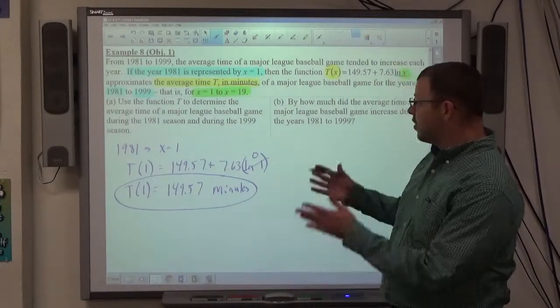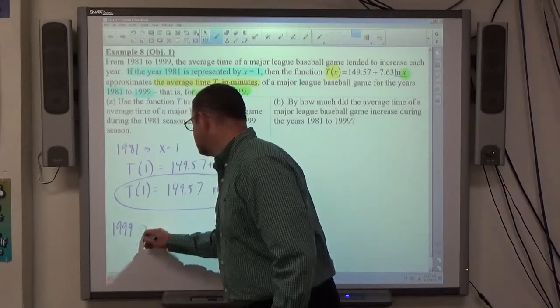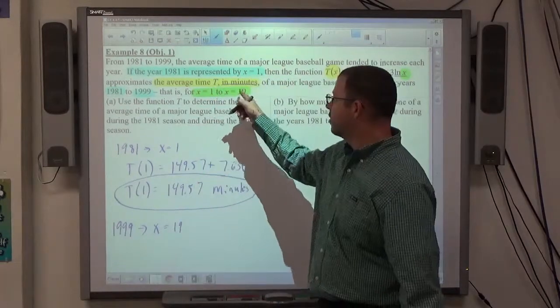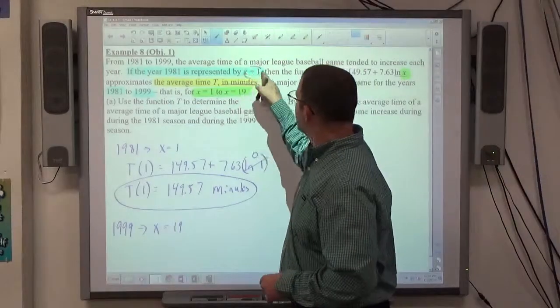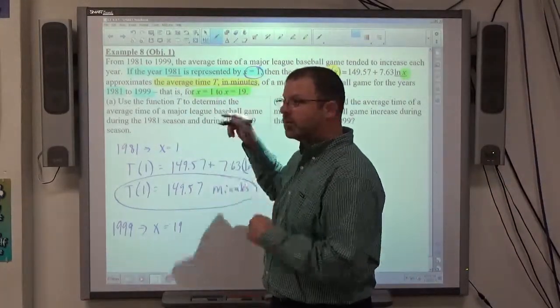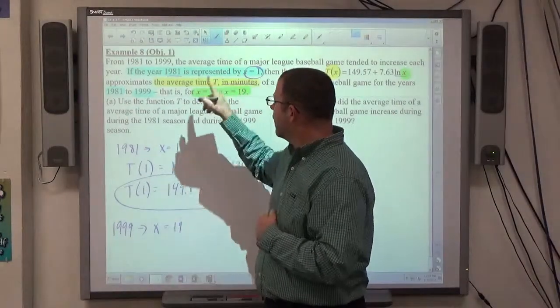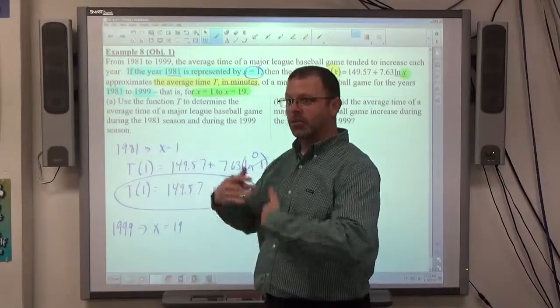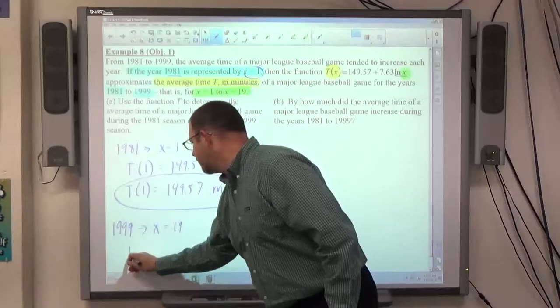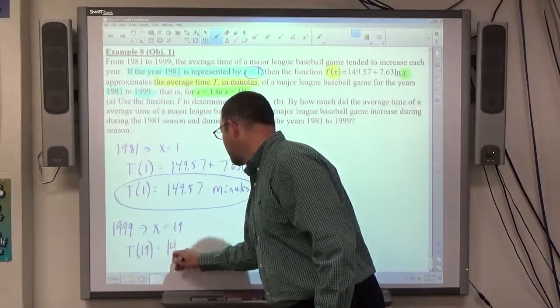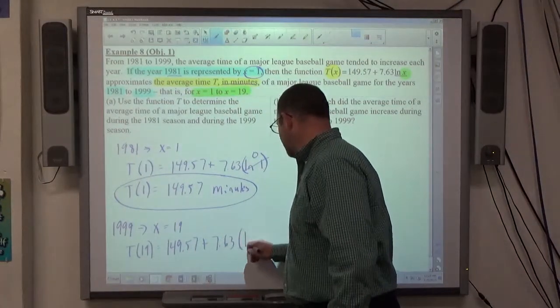The other thing they ask us is during the 1999 season. 1999 represents X equals what? X equals 19. They told us right here X equals 19. But even if they didn't tell us that, look and see how this number relates to this number. Subtraction. 1981 minus 1 is 1980. We're subtracting 1980 from the year to get that. So subtract 1980 from 1999, you get 19. So there's a way to find out even if they don't tell you that. If X equals 19, we're trying to find T of 19.